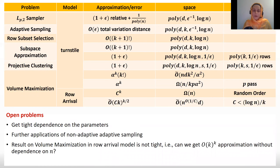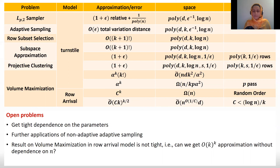Let me conclude with open problems. First, it is very interesting to obtain tight dependence on the parameters for our sampler and adaptive sampler. Second, we would like to explore further applications of non-adaptive adaptive sampling for other problems. Finally, a specific open question: we do not know if the volume maximization result in the row arrival model is tight — if we allow an approximation factor of k^k, is it possible to get an algorithm with no dependence on n?